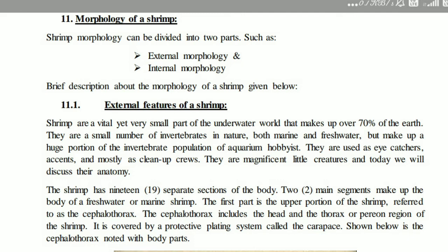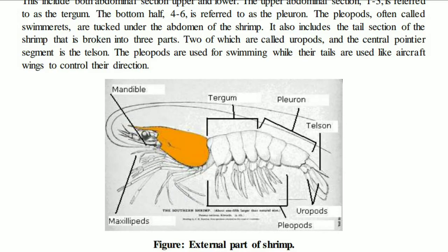The cephalothorax region is covered by the carapace — shown in orange in the diagram. The external parts of the shrimp include the tergum, pleuron, and telson. Within the cephalothorax region are the pleopods, periopods, maxillae, and mandibles.